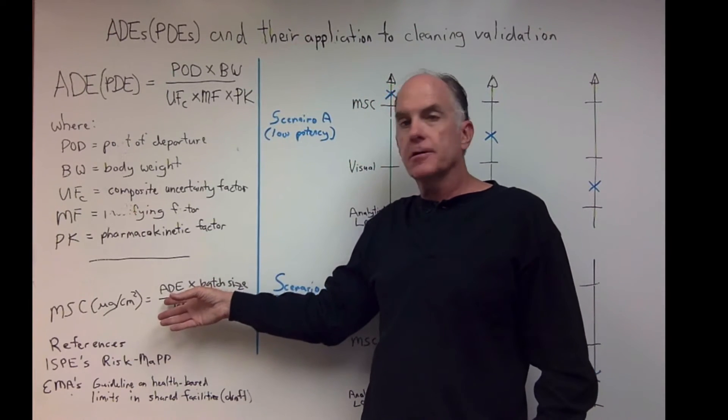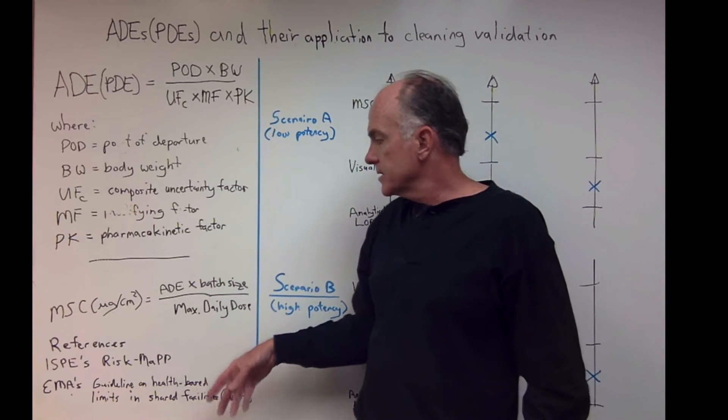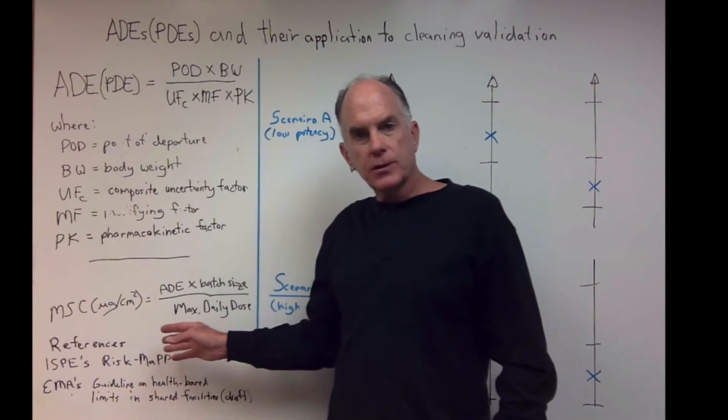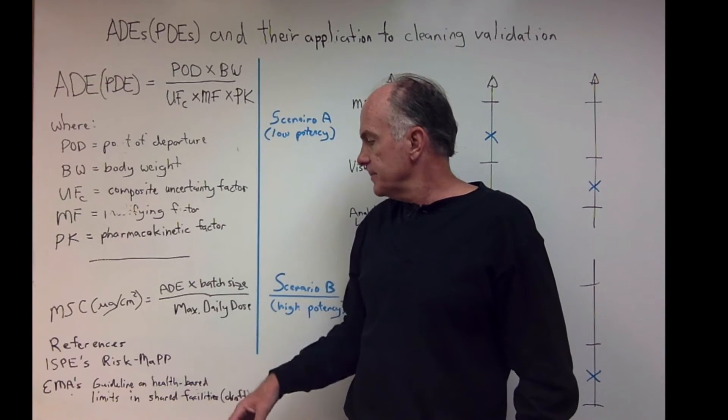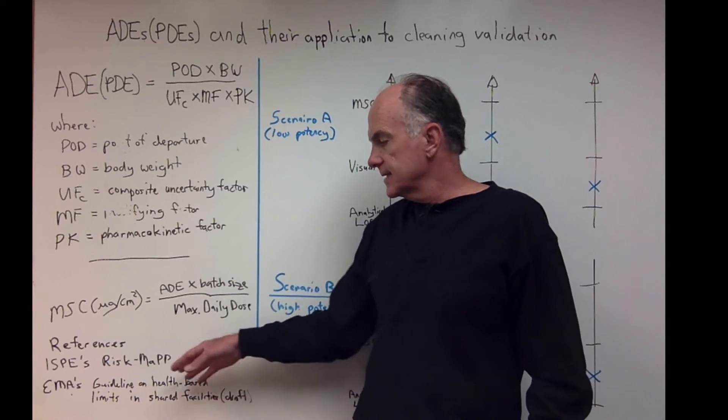So that's your ADE times your batch size divided by the maximum daily dose. A couple references I'd like to point you to are ISPE's Risk-MaPP and the EMA's guideline for health-based limits and shared facilities.